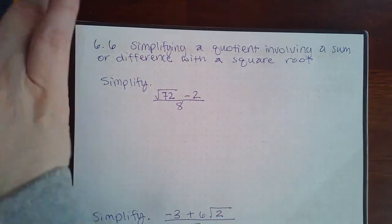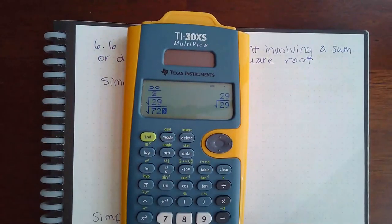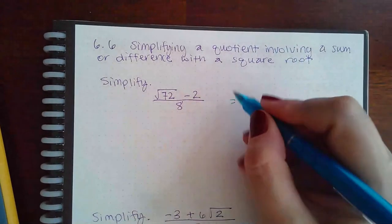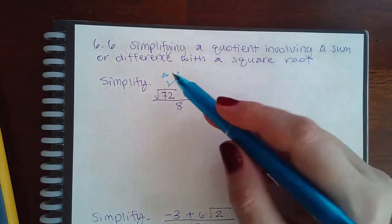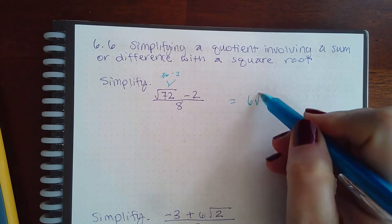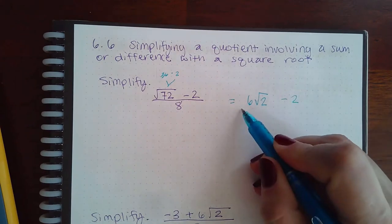The square root of 72 is 6√2. This is √36 times 2, and the square root of 36 is 6, and there is no square root of 2 so it stays. Then we have minus 2, and then we have it all over 8.